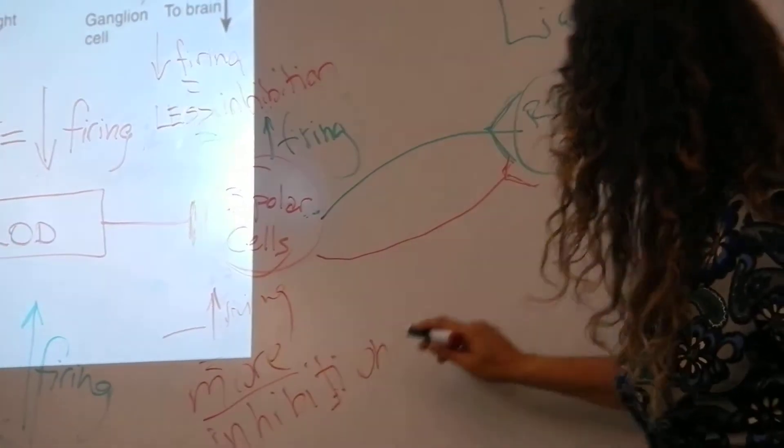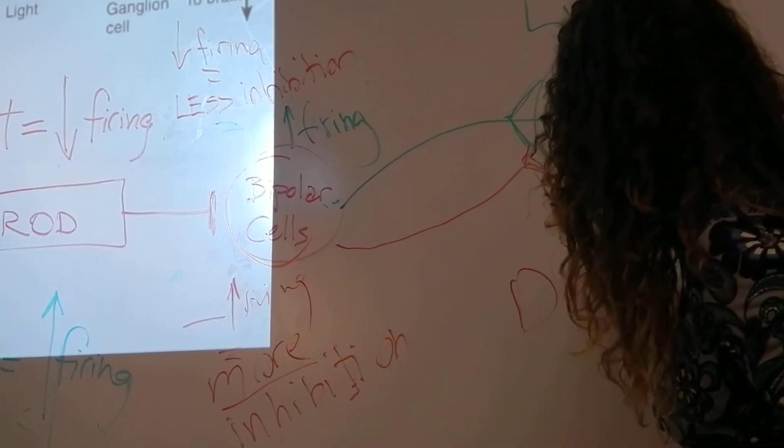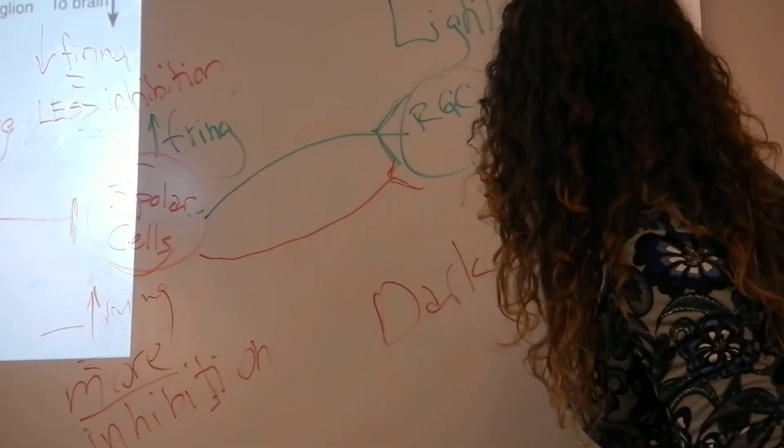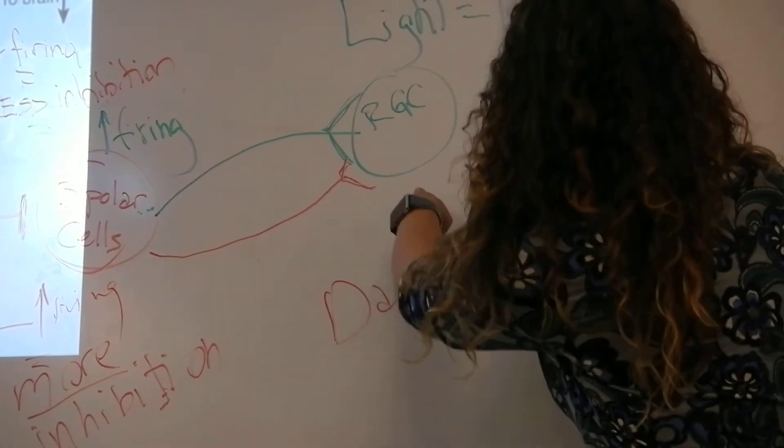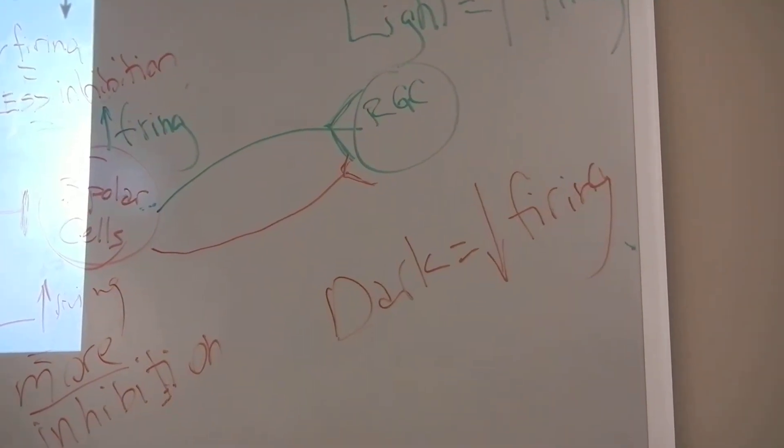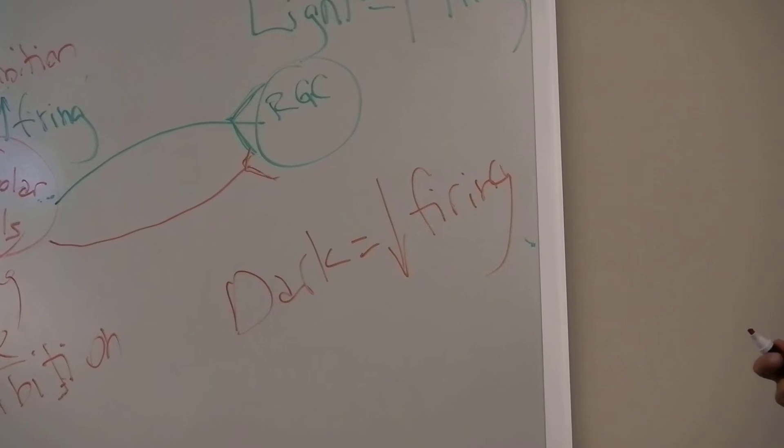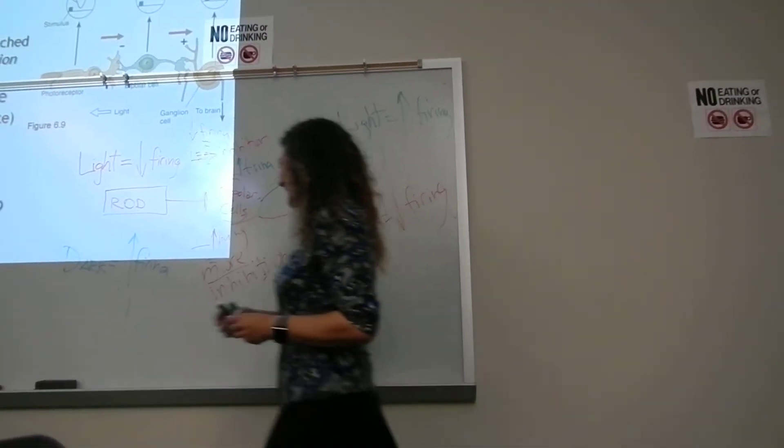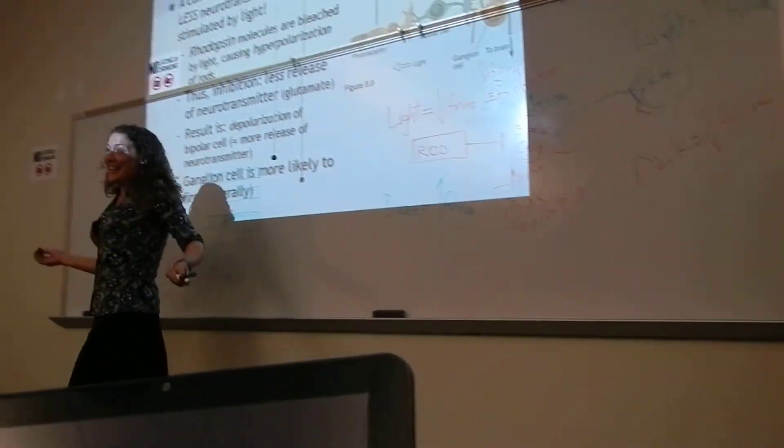So in the case of dark, dark equals less firing at the level of the retinal ganglion cell. Joy, you're laughing. You think you got it? I didn't design the eye, you guys.